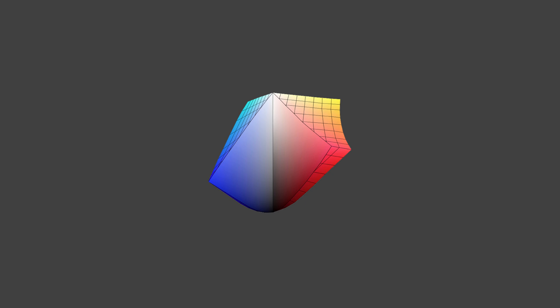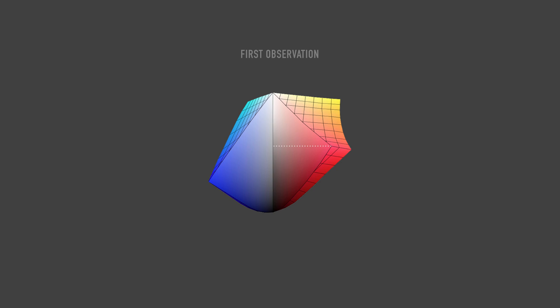Several useful observations can be made by looking at the full human color gamut. First observation: each color reaches its ultimate saturation, i.e. ultimate purity, at a different level of lightness. For example, the deepest blue is always dark — there is no light-saturated blue color. Such a color will be light blue, weakly saturated. These colors are also called pastel colors. In the same way, there is no dark, bright yellow color — such a color will inevitably be earthy or boggy.